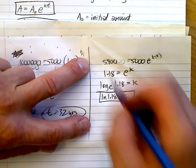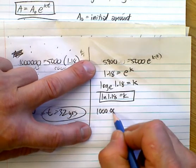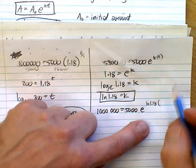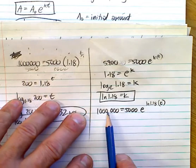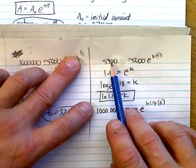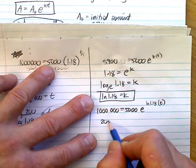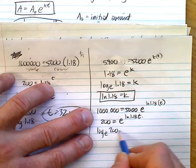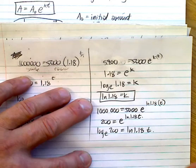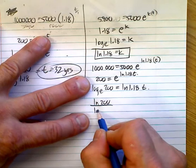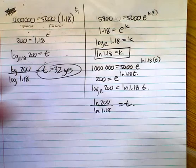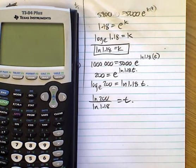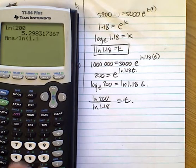When I go back and now find out how long it's going to take to get to a million, 5,000 E to the power of LN 1.18 times how many years? Well, that's what I'm looking for. I'm looking for how many years it's going to take me to get to a million. It took me one year to get to 5,900. How many years to get to a million? So, we do the division here by 5,000. You get 200 is equal to E to the power of LN 1.18 T. So, log base E of 200 is equal to LN 1.18 T. So, this is now LN 200 divided by LN 1.18. You get T. So, let's see if that works. LN 200 divided by LN 1.18. Boom. 32 years just like before.